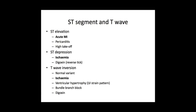Other possibilities for ST elevation include pericarditis, which can result in widespread non-specific ST elevation across all leads, not related to a particular anatomical area of the heart. Or something called high takeoff, where you get the appearance of ST elevation owing to the fact that the baseline looks as if it's elevated into the T wave — but in fact it's not actually classic ST elevation as you might find in acute MI.